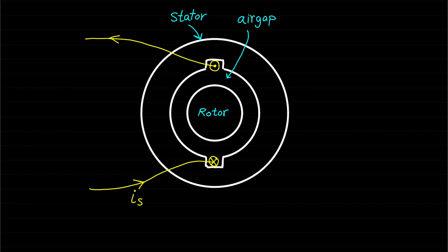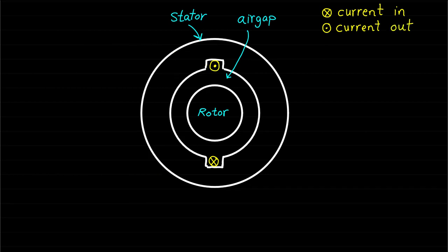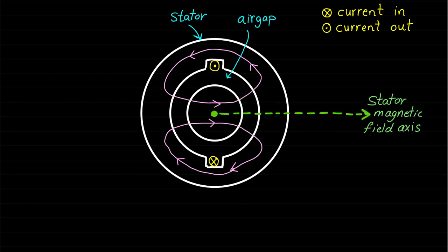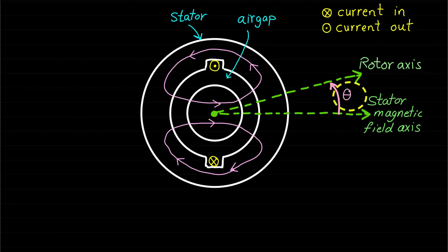The cross sign represents the current in, while the dot sign represents the current out. By applying the right-hand rule to the excitation current, the stator magnetic field paths will be as shown. Based on this magnetic field path direction, the resultant stator magnetic field path and axis will be in this direction. Let's assume that the rotor axis is as shown and the rotor is separated from the stator axis by the angle theta.